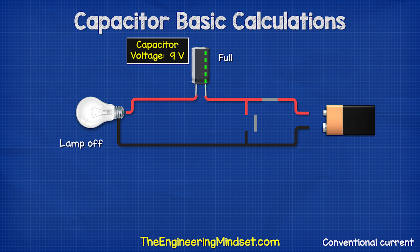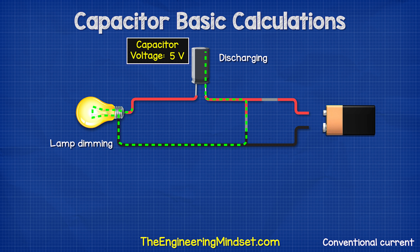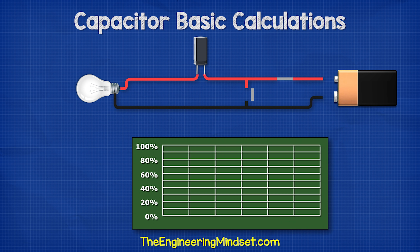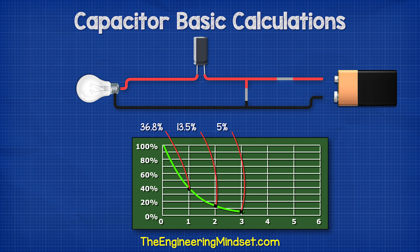When we provide a path for the capacitor to discharge, the electrons will leave the capacitor and the voltage reduces. It doesn't discharge instantly, but follows an exponential curve. We split this curve into six segments but are only interested in the first five. At point one the voltage is always 36.8%, point two is 13.5%, point three is 5%, point four is 1.8%, and point five is 0.7%.